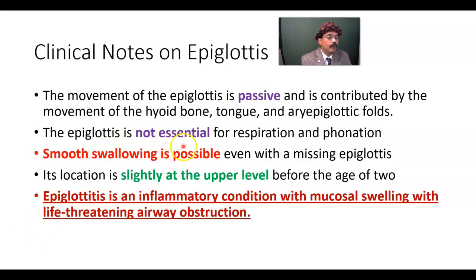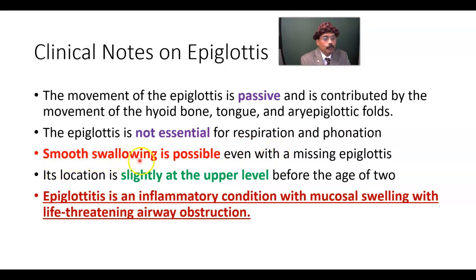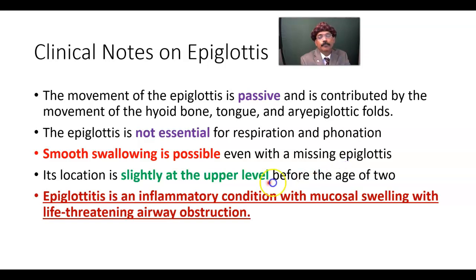The epiglottis is not essential for normal respiration and phonation. However, if there is pathology, such as acute epiglottitis, the voice will be altered. Recent research shows that smooth swallowing is possible even with a missing epiglottis — food may not enter the laryngeal inlet. The epiglottis is located slightly higher before the age of 2; after age 2, it descends to the adult position.